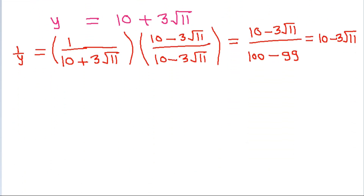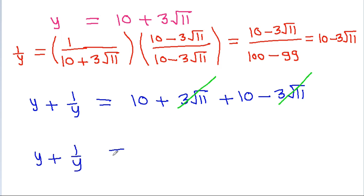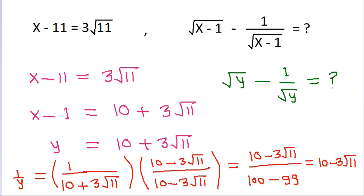Now if we add y and 1 by y, we get y plus 1 by y equal to 10 plus 3 root 11 plus 10 minus 3 root 11. The 3 root 11 and minus 3 root 11 cancel, so y plus 1 by y is equal to 20. We have to find the value of root y minus 1 by root y.